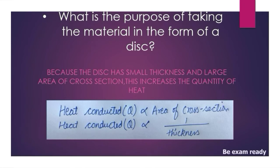Here is the next question: Ismein hamne material disk ki form mein hi kyu liya hai? Pehla reason yeh hai ki disk ki thickness bahut kam hoti hai. Doosra, yeh hume large area of cross section provide karta hai. And we know that heat conducted is directly proportional to the area of cross section and inversely proportional to the thickness.